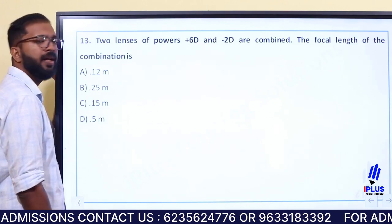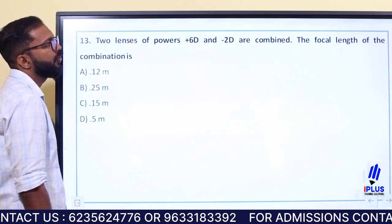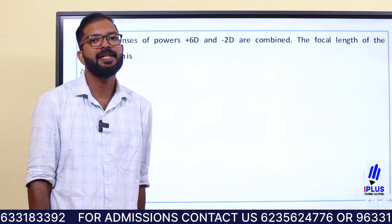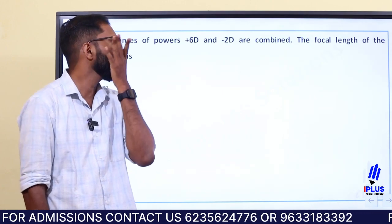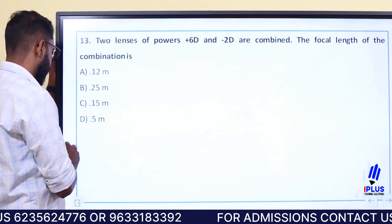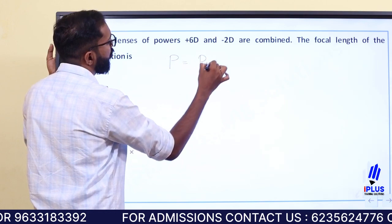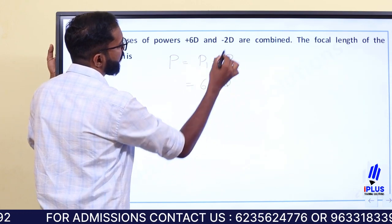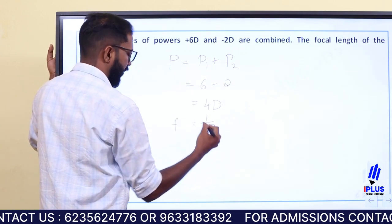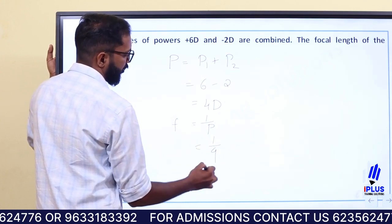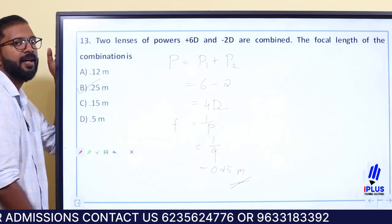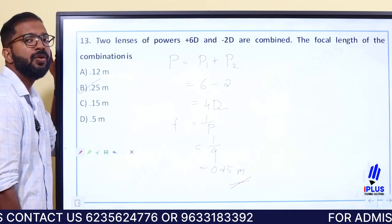Two lenses of power plus 6D and minus 2D are combined. The focal length of the combination: total power P equals 6 plus (minus 2) equals 4D. The focal length is inversely proportional to power, that is equal to 1 by 4, which is 0.25 meter focal length.